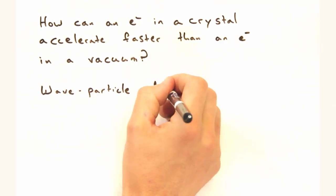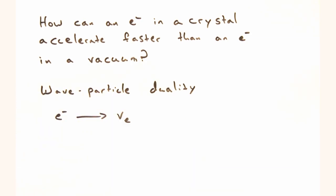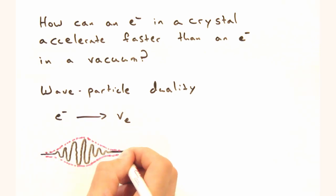Yeah. I think to understand this, I have to come back to this whole wave-particle duality. Because we're not talking about a physical electron moving, right? Instead, we're talking about the group velocity of a wave moving.